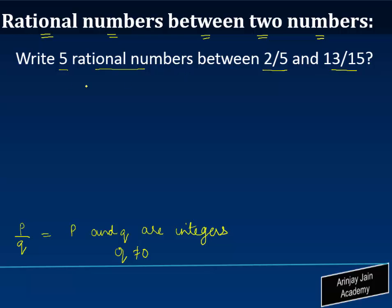You are told that there are two rational numbers 2/5 and 13/15. You have to find out 5 numbers which lie between these two numbers. Now normally there are infinite numbers which lie between any two rational numbers. To find out 5 of these numbers, the first step is you need to convert the given numbers in such a form that their denominators are common.